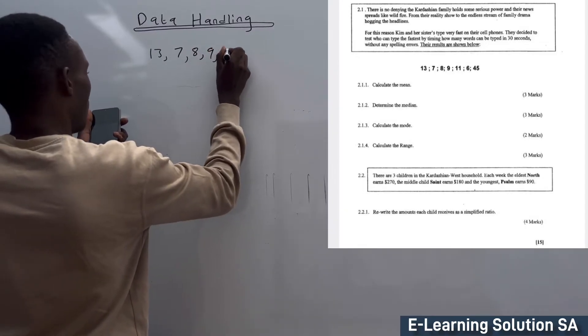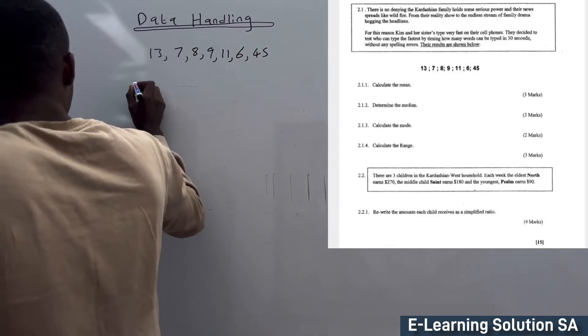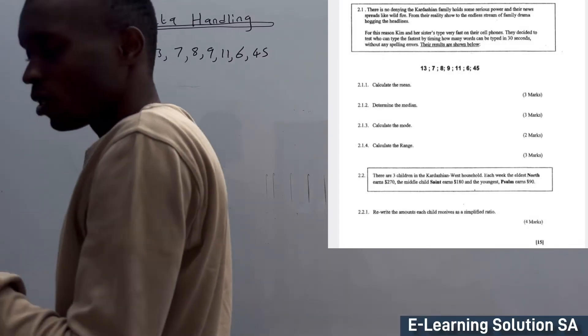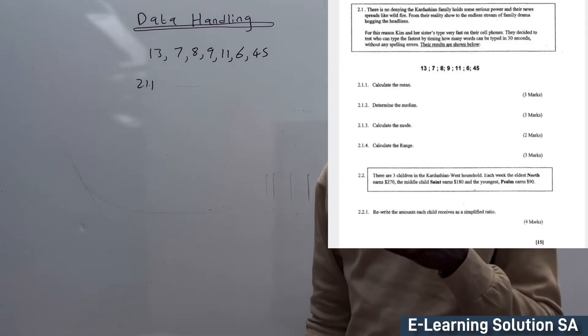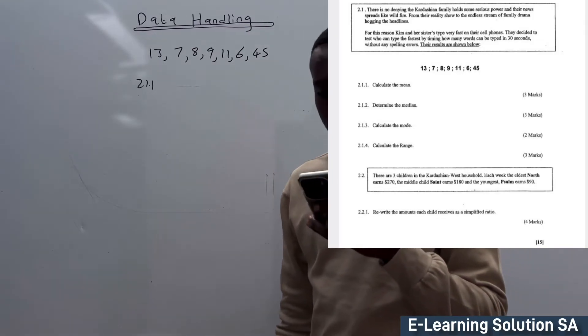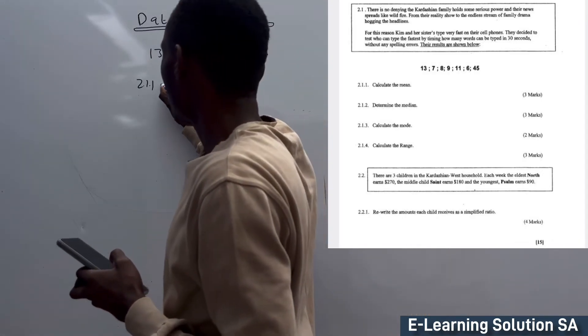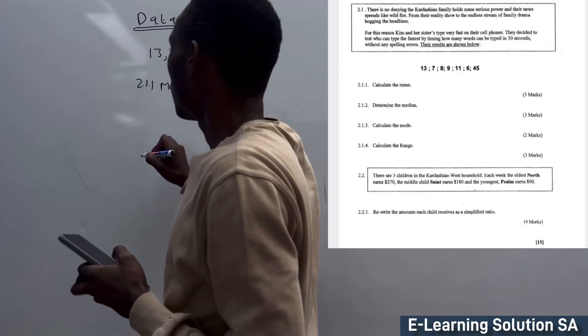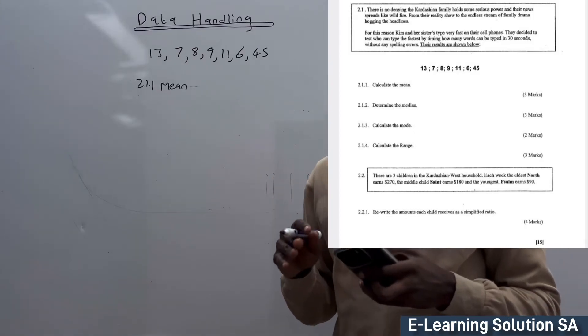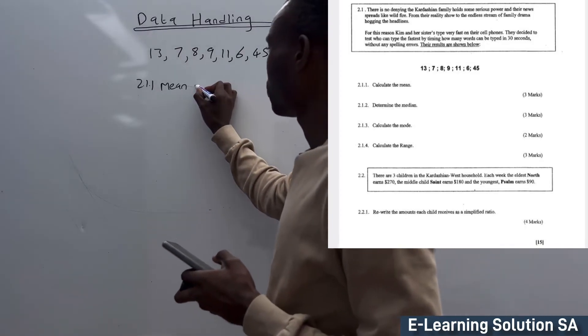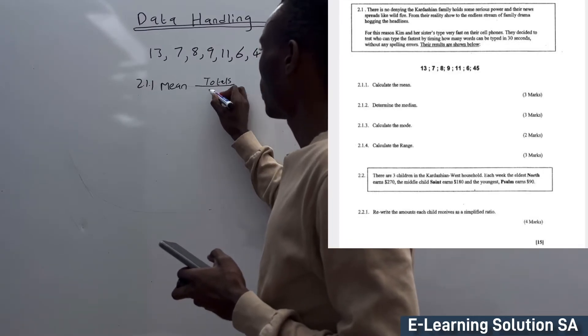2.1.1: Calculate the mean. 2.1.2: Determine the median. First, understand what is mean. When they say mean, it simply means you need to calculate the average. When we say average, you need to use the formula: total divided by number of items.